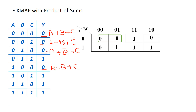In that green group, the first cell and the second cell are grouped together. The first cell has A=0, B=0, C=0 and the second cell has A=0, B=0, C=1. So between cells 1 and 2, C changes. A does not change and A equals 0, so we write A. B equals 0 and B does not change, so we write OR B. These two cells are max terms and when we combine them, we are left with A OR B.